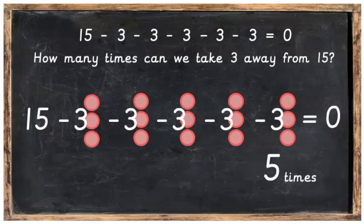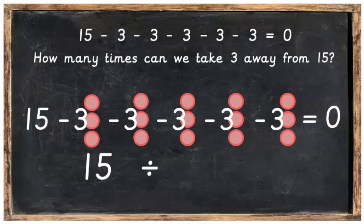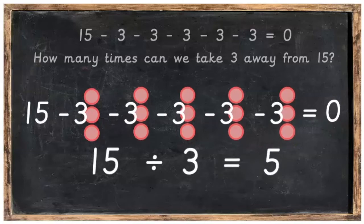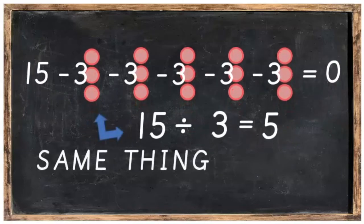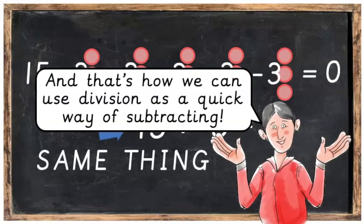And to write this into a division sum, we would write 15 divided by 3 is equal to 5. So basically, these are both the same thing. And that's how we can use division as a quick way of subtracting.